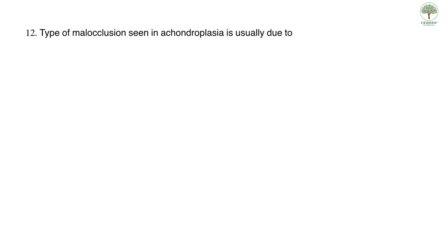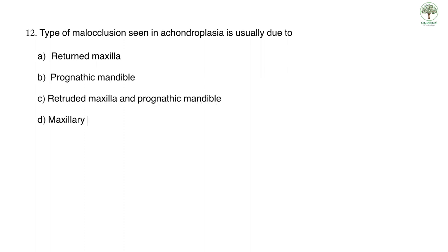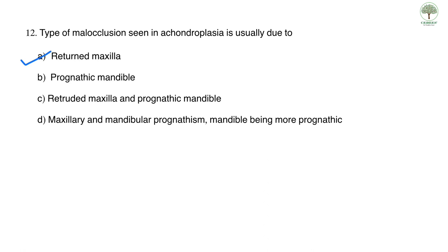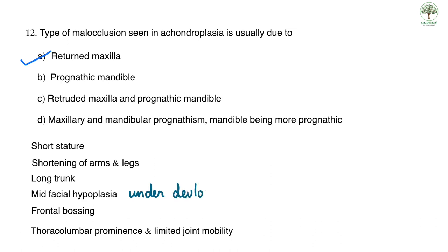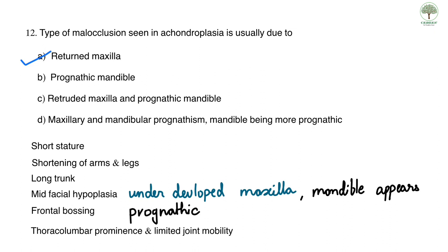Question twelve: the type of malocclusion seen in achondroplasia is due to which cause? The correct answer is A, retruded maxilla. Cardinal features of achondroplasia include short stature, rhizomelic shortening of arms and legs, a long trunk, mid-facial hypoplasia, frontal bossing, thoracolumbar prominence, and limited joint motion. Because of mid-facial hypoplasia the maxilla is underdeveloped, and relative to this underdeveloped maxilla the mandible appears prognathic; this disparity between the retruded maxilla and the apparently prognathic mandible results in malocclusion.